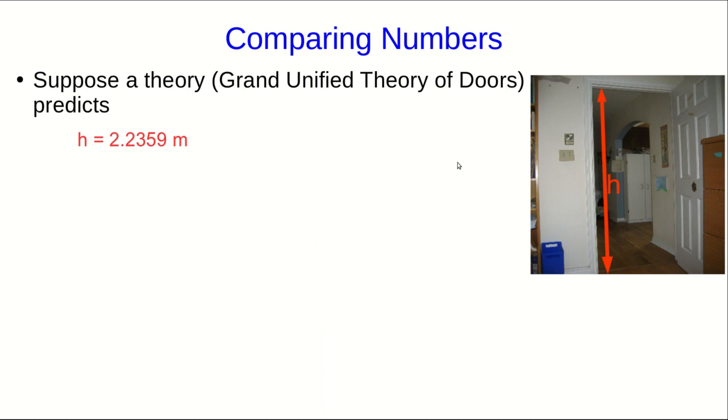Let's now look in detail at the process of taking a series of measurements and comparing them with a theoretical prediction. So of course, there's no theory that predicts the heights of doors, but suppose there was. Let's say it was called the Grand Unified Theory of Doors, and it predicts that this door in my house has a height of 2.2359 meters, and I wish to test that.